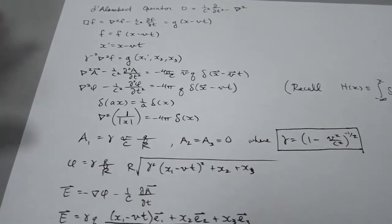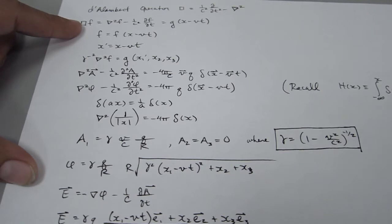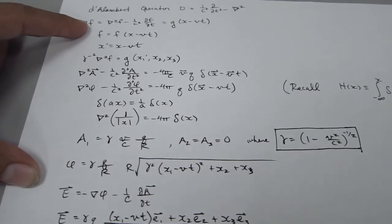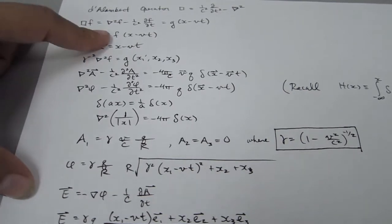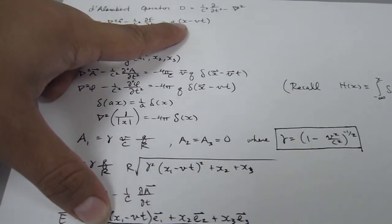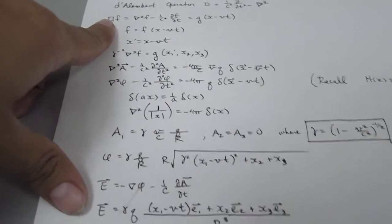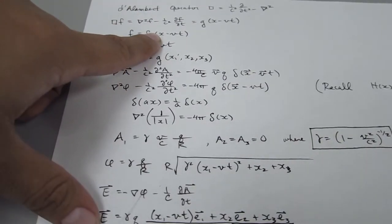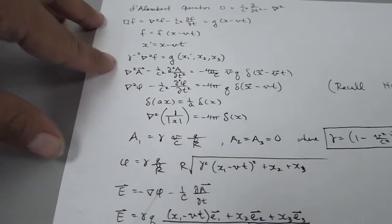The Laplacian operated on the potential equals minus 4pi times the charge density — which you might recall is the Poisson equation — but now we have this extra term: 1 over c-squared times the second time derivative of the potential. We use the d'Alembertian operator of some general function, and we also assume that it equals some function that is Galilean transformed. Because this is a wave equation, the solution should have the form x minus vt, so we let x-prime equal x minus vt. That's the Galilean transformation.